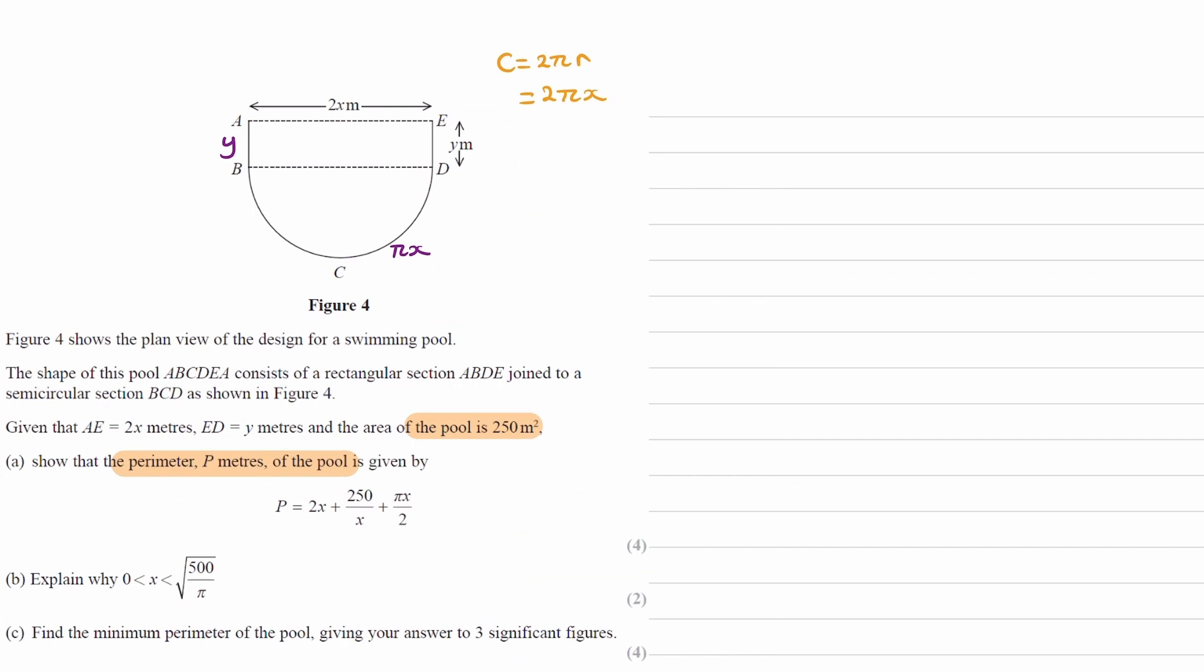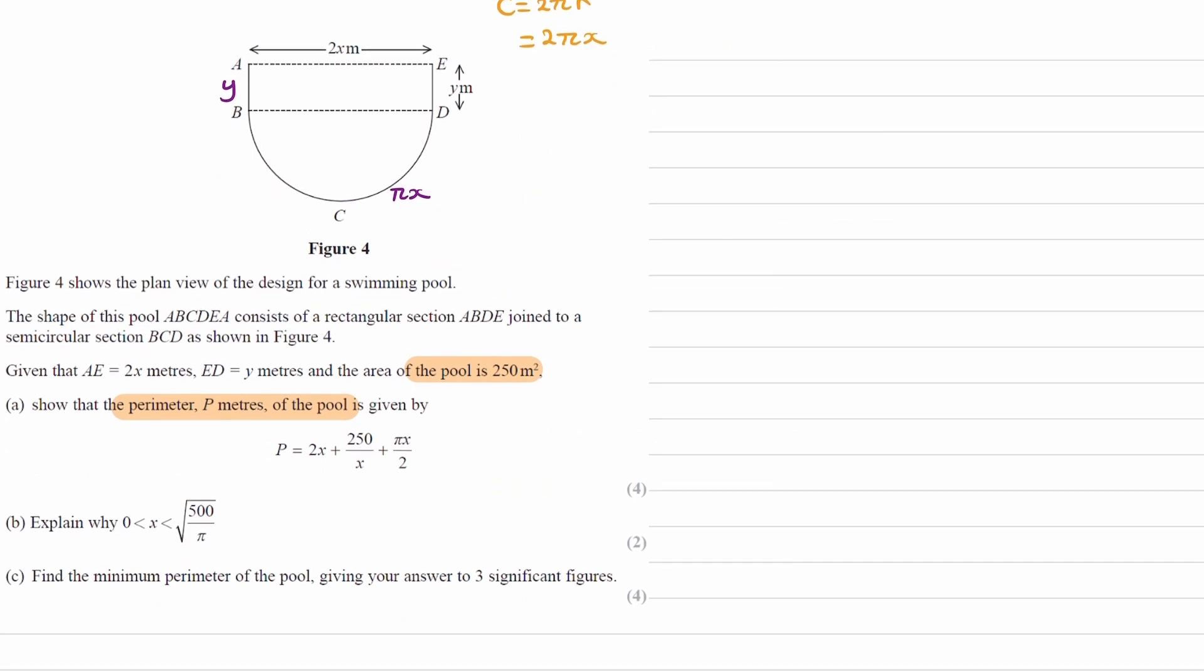We can combine all of that information. We end up with the perimeter equal to 2x, the top length, plus the two sides, plus the semicircle circumference. Now, this is not the same thing as what we have down here. In this equation, there is no y, but we have a y over here. So what we want to do is get another equation which expresses y in terms of x, and we can do so by using the area.